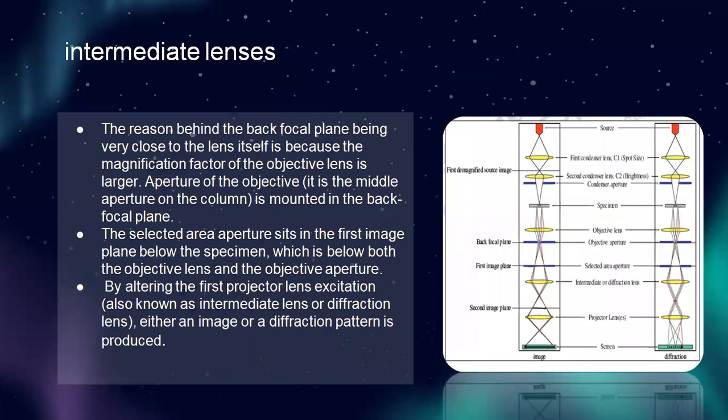Next, I will discuss intermediate lenses. The reason why the back focal plane is very close to the lens itself is because the magnification factor of the objective lens is large. The aperture of the objective lens — the middle aperture on the column — is mounted in the back focal plane. The selected area aperture sits in the first image plane below the specimen, below both the objective lens and the objective aperture. By altering the first projector lens excitation — also known as the intermediate lens or diffraction lens — either an image or diffraction pattern is produced.